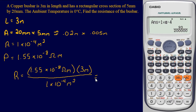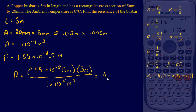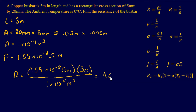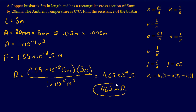Plugging that into our calculator gives an answer of 4.65×10⁻⁴ ohms, or equivalently 465 micro-ohms. That is our final answer.